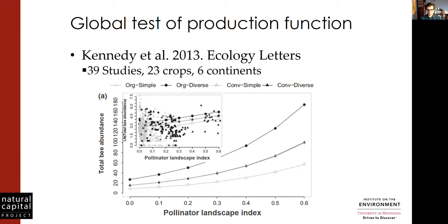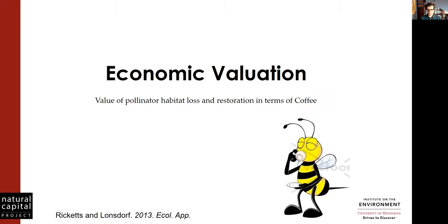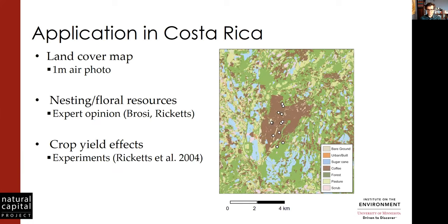That covers the ecology of bees getting to those fields. The next part is the valuation — how do we actually translate abundance into valuation? We're going to be talking about the benefits to coffee production of the bees themselves.